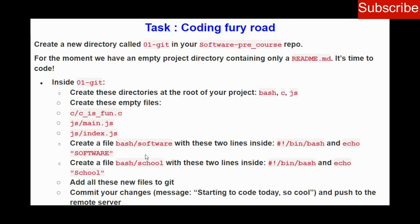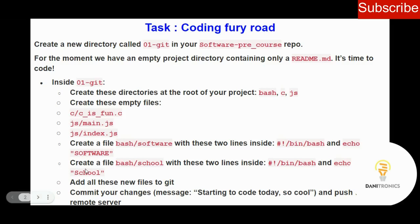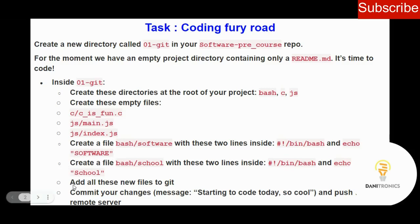The question says to do something similar again — inside bash, create a new file called 'school' with two lines. This is essentially the same thing as what we just did with the software file. Instead of repeating the same steps, I'll continue to the next instruction: add all these new files to git.